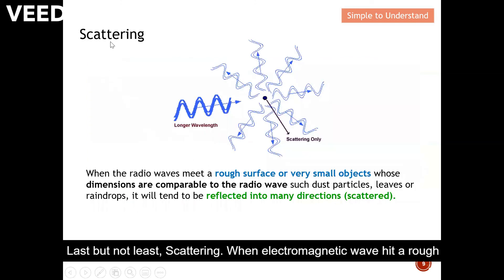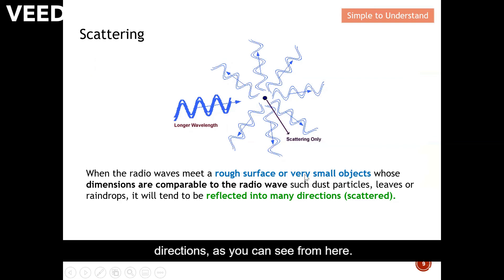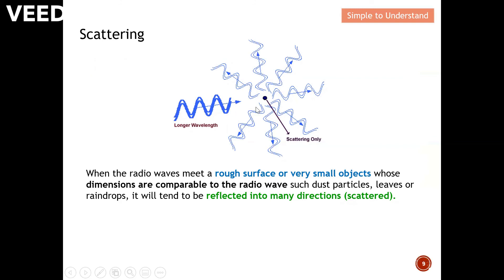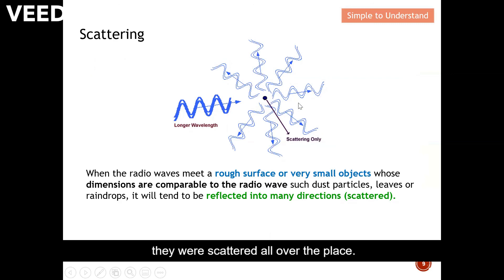Last but not least, scattering. When an electromagnetic wave hits a rough surface or a very small object — small as compared to the wavelength of the electromagnetic wave — scattering actually occurs. Scattering means the wave reflects into many directions, as you can see here. For example, when the incident wave hits a small object like a rain droplet, it is scattered all over the place.